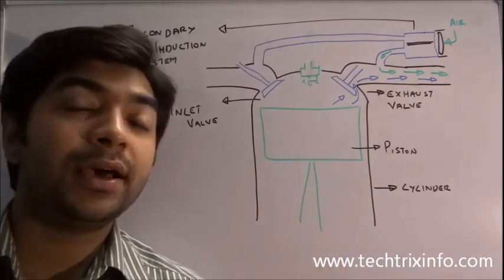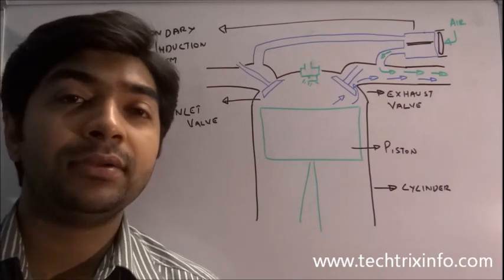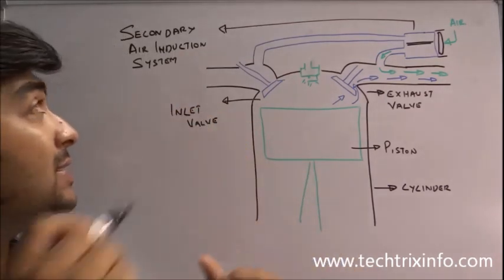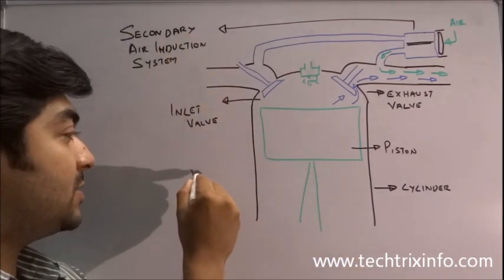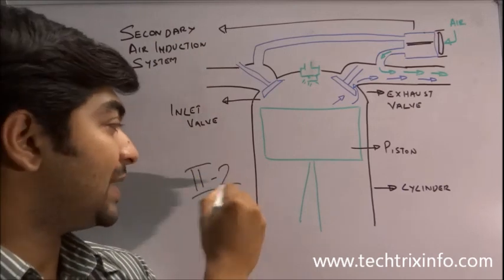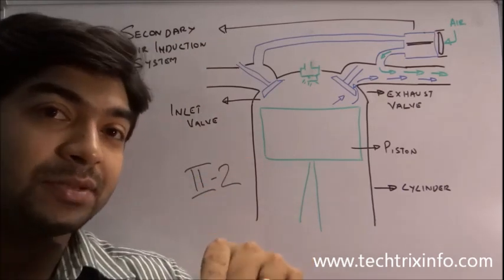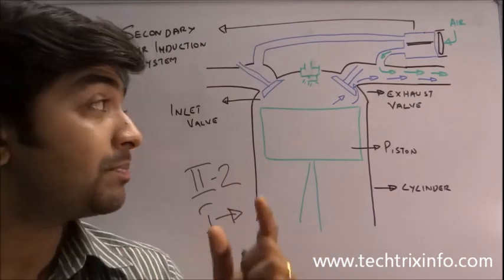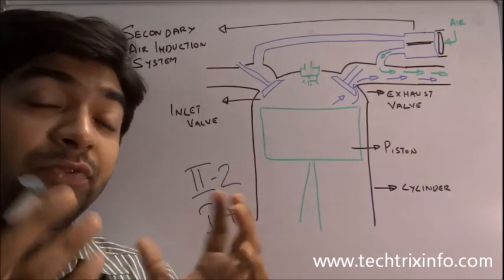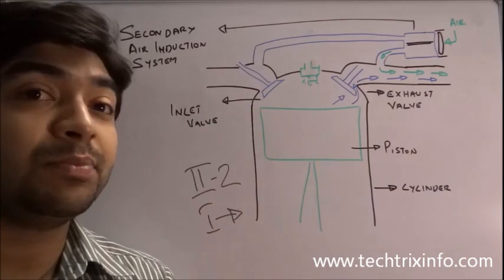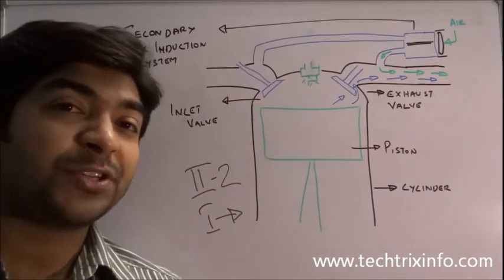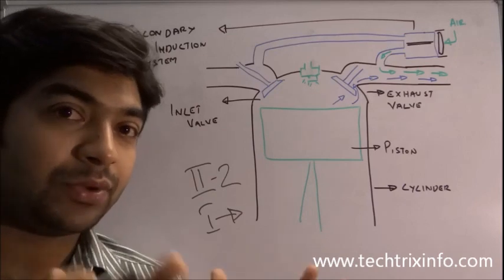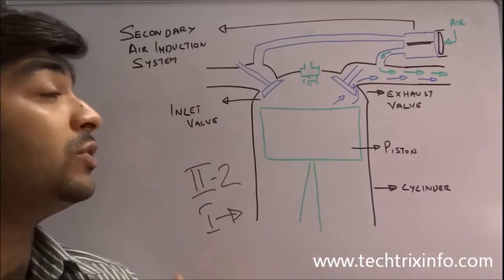This system is used in Indian bikes to comply with Euro 2 standards, which is the pollution standard. The term itself implies 'secondary' — meaning there is already a primary air induction system. The primary air induction system is the air being supplied into the carburetor, mixed with fuel, and pumped into the combustion chamber of a petrol engine to create power.